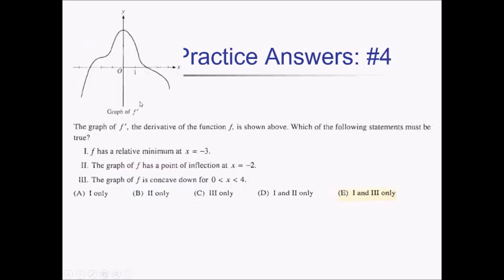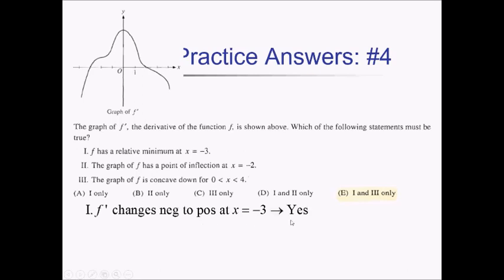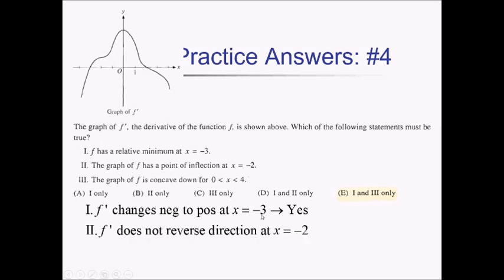For this problem, we're given the graph of f prime and we want to know which of these statements has to be true. Statement 1: f has a relative min at x equals negative 3. If it does, then f prime should be changing from negative to positive at negative 3. Looking at the graph, f prime is indeed changing negative to positive — so we do have a relative min at x equals negative 3. Statement 2: the graph of f has a point of inflection at x equals negative 2. The giveaway for that is if f prime reverses direction. Looking at our graph, at negative 2 the graph of f prime is not reversing direction — it's increasing, then still increasing. So this is a no.